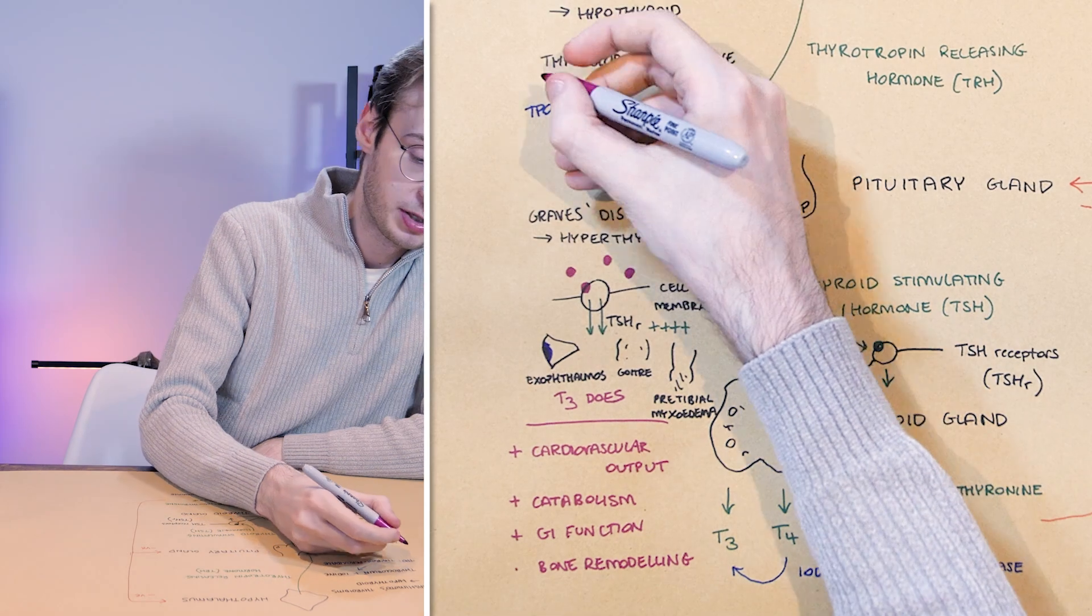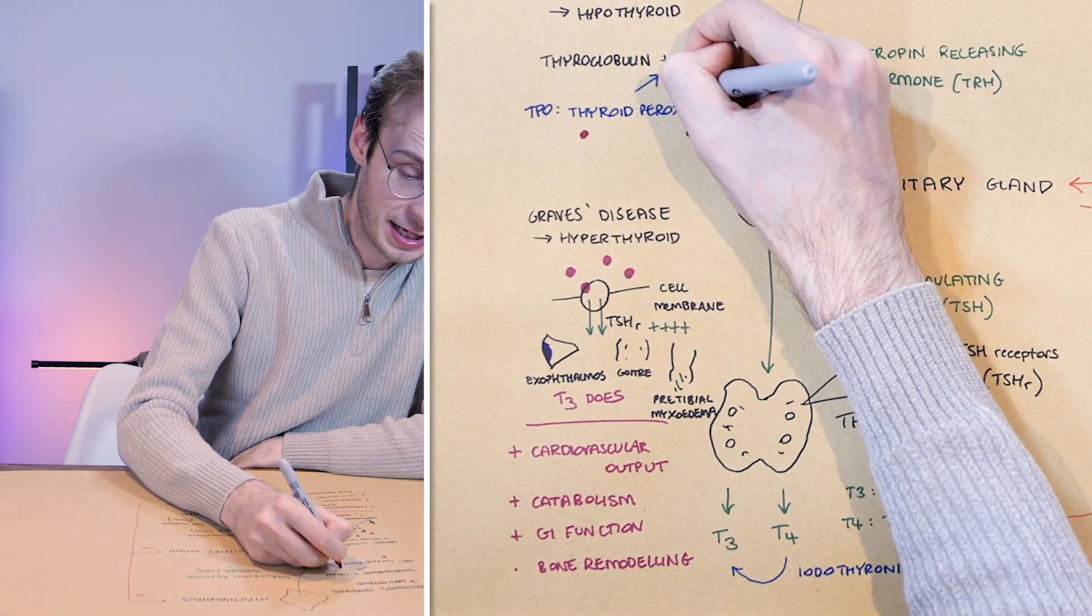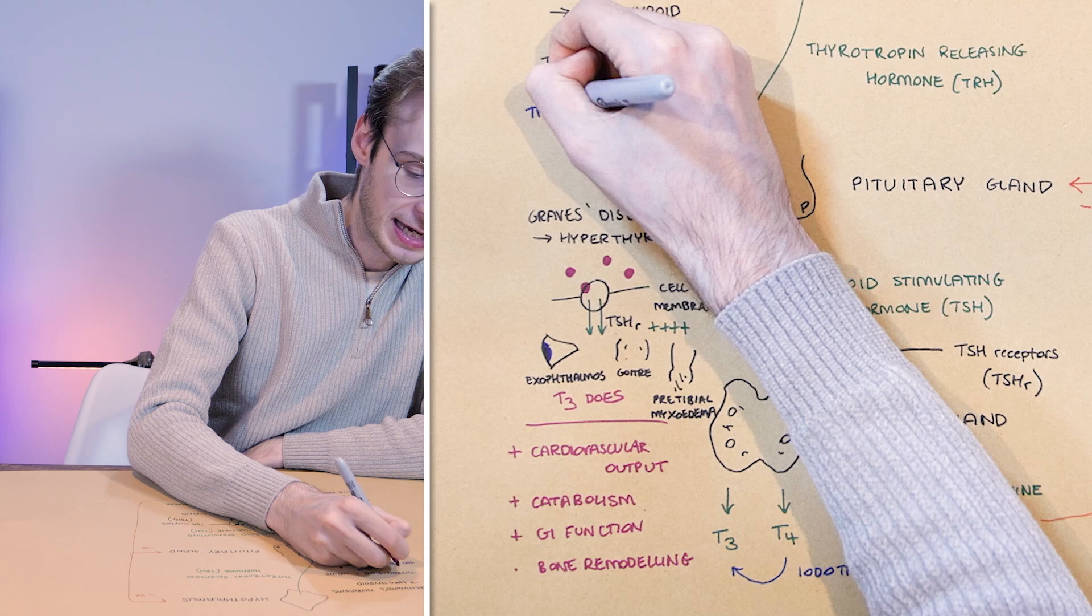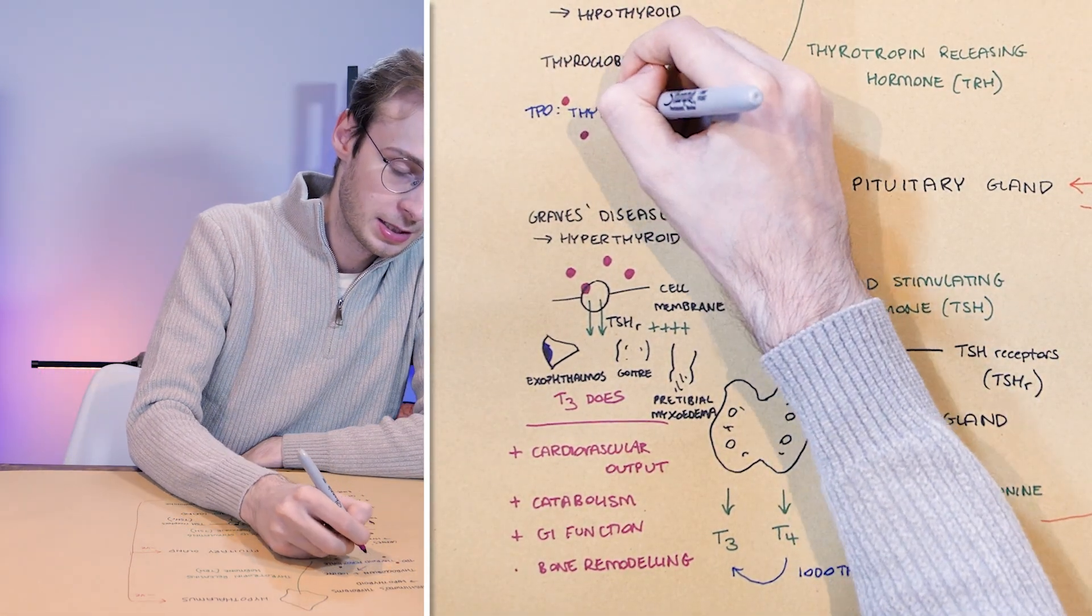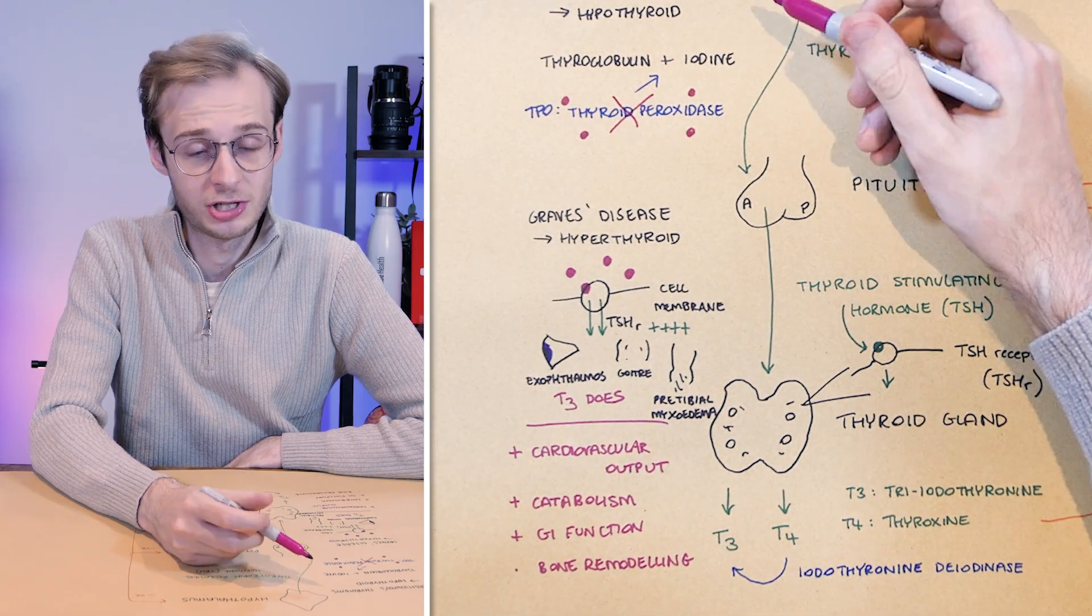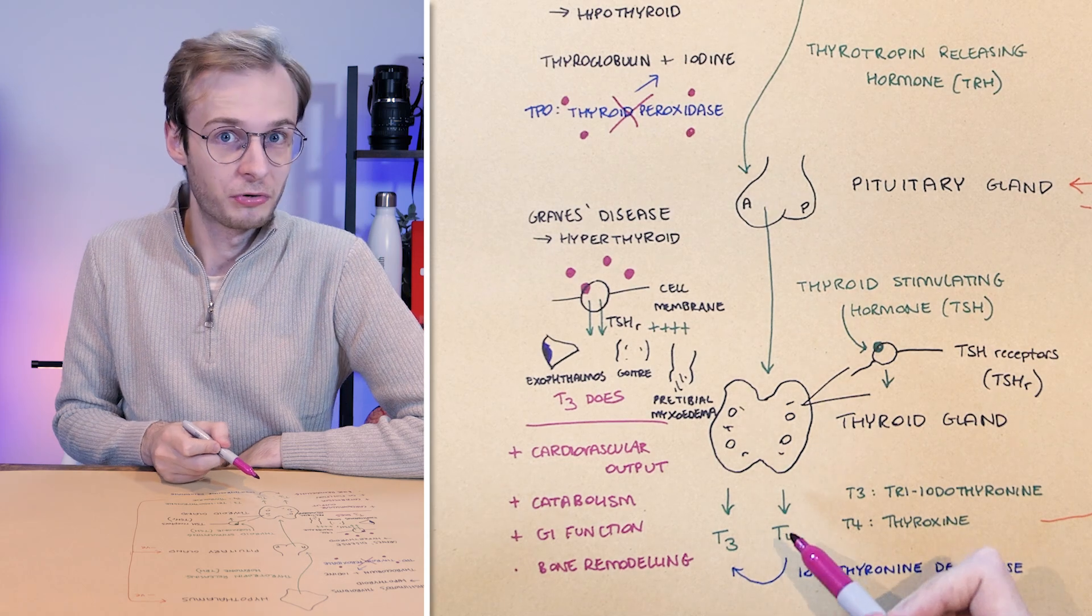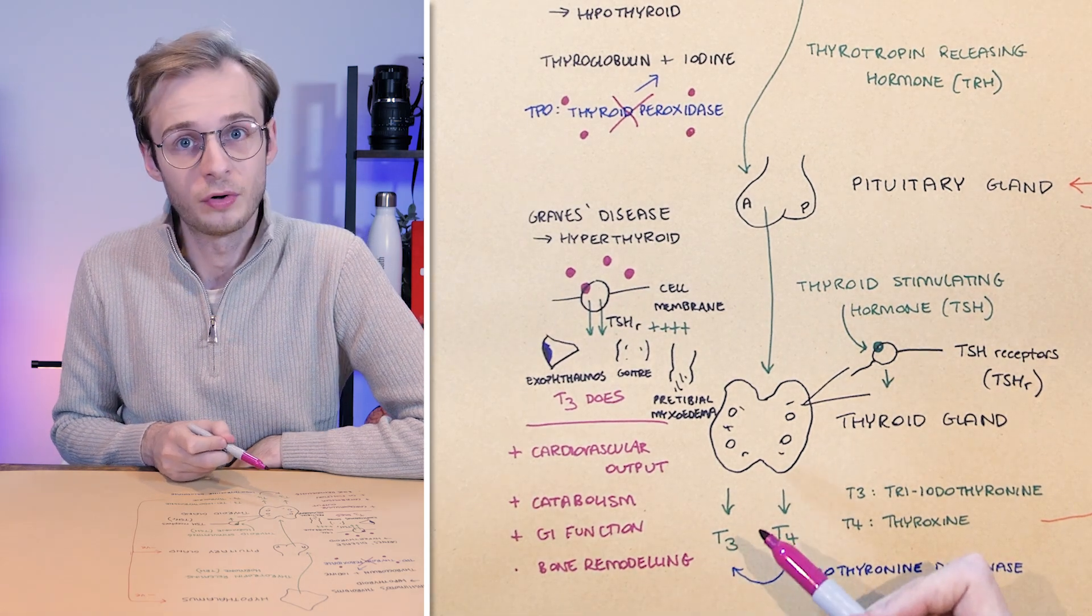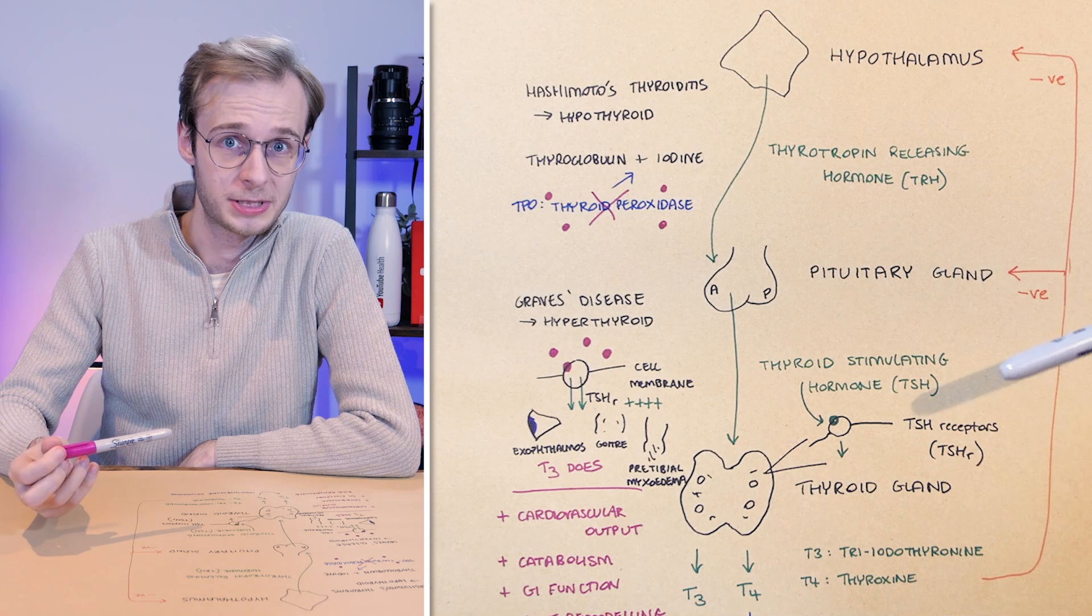And what happens in Hashimoto's thyroiditis is you develop antibodies against this enzyme, against thyroid peroxidase. This stops the enzyme being able to catalyze this reaction, adding iodine to thyroglobulin, which in turn means you can no longer produce T3 and T4 in the amounts you need it. And that's how it leaves us in a hypothyroid state.